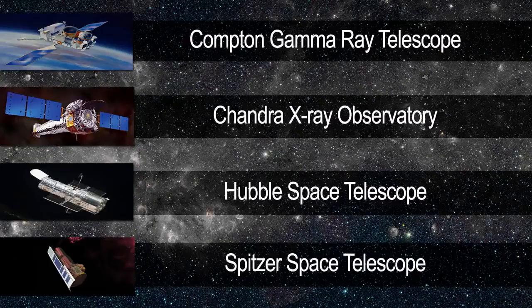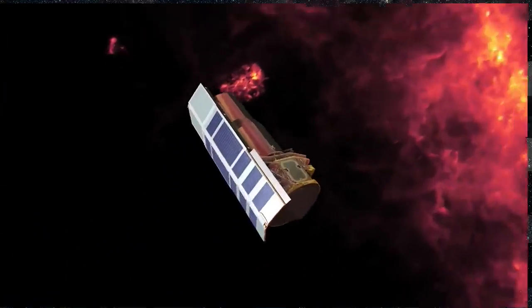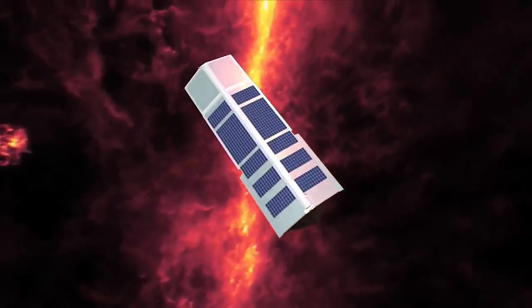The Spitzer Space Telescope is a member of NASA's family of great observatories. Spitzer is the infrared member of this family.